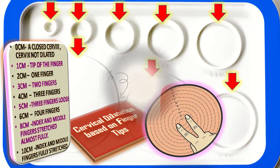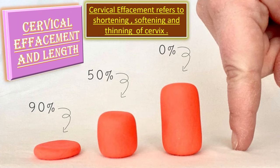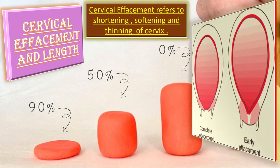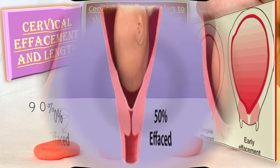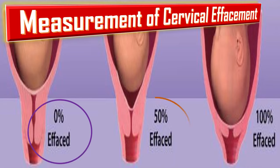After dilatation, let us talk about cervical effacement and length. Cervical effacement refers to shortening, softening, and thinning of the cervix. Measurement of effacement is usually in percentages, ranging from 0 to 100%. Zero percent means the cervix is not effaced, and 100% means the cervix is fully effaced.